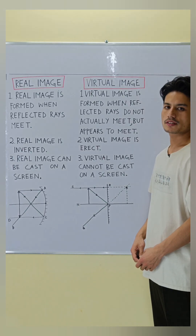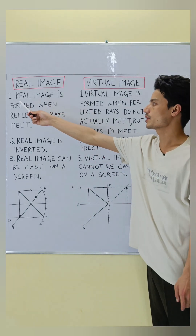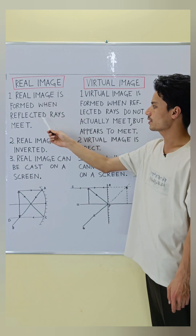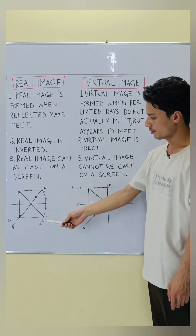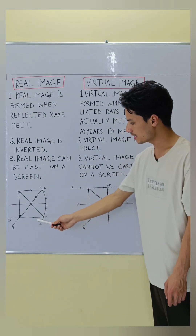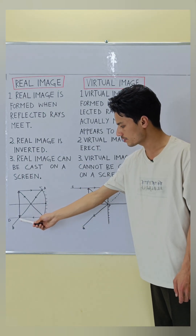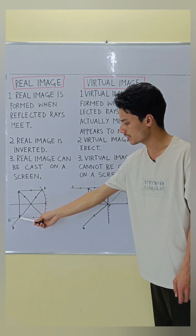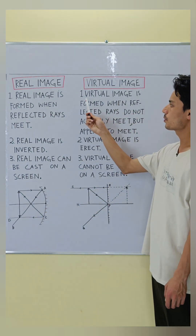Difference between real image and virtual image. Real image, point number one: a real image is formed when reflected rays actually meet. In the ray diagram given below, AB is the reflected ray and CD is the other reflected ray. The two reflected rays meet at this point and the image is formed exactly at this point.